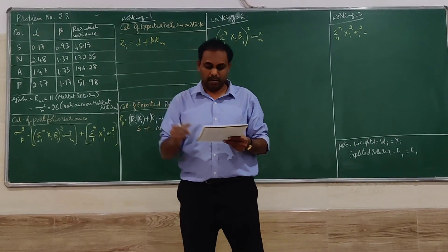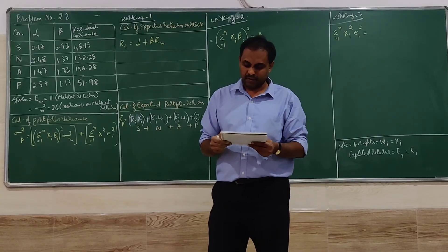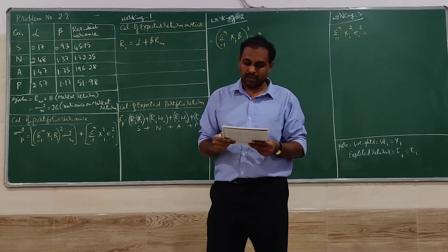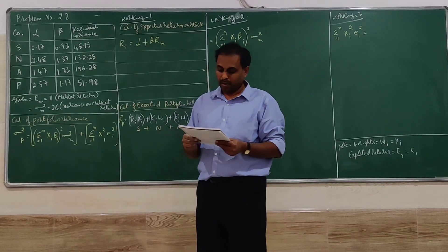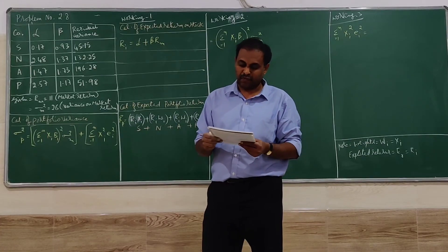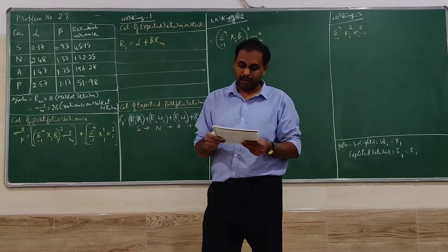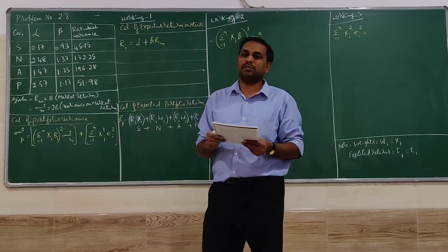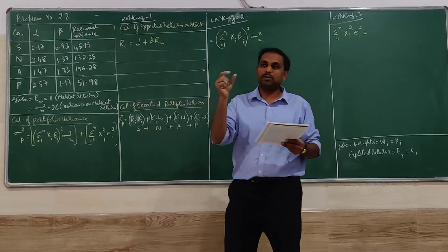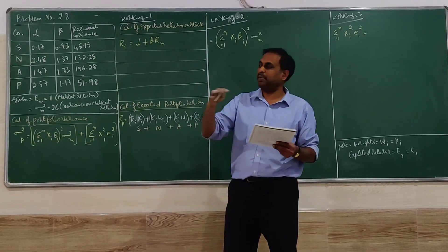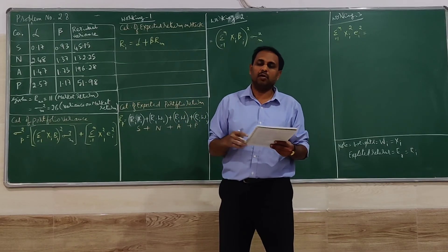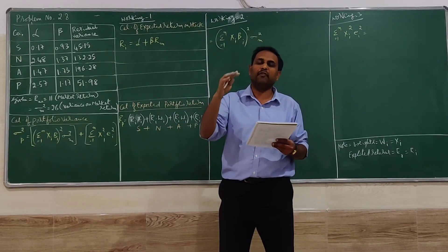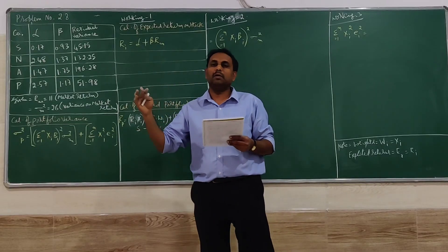This problem is a bit different than the previous ones. An investor wants to build a portfolio with four stocks with the given details. We need to find out the portfolio return and portfolio variance. The investment is spread equally over the stocks — underline the word 'equally' — so equal means the entire investment has been done in the four different stocks equally.